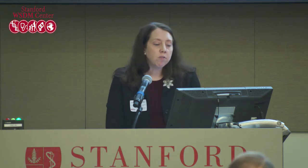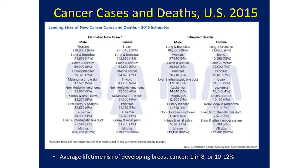Moving on to a portrait of cancer causes and deaths in the United States in 2015, from the American Cancer Society: looking at new cases, the most common cancer of men is prostate cancer, and of women is breast cancer. When we look at cancer deaths, the most common cause in the United States, unfortunately, is lung cancer for both genders. Breast and prostate cancer are lower on the list, which is a measure of the success we've had in early detection and successful treatment. But certainly lung cancer remains a giant problem.